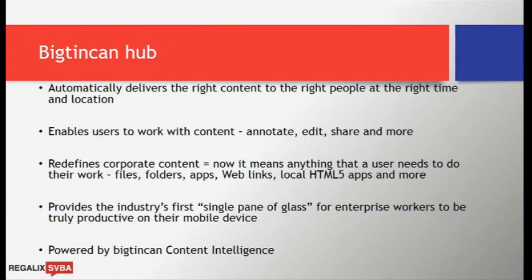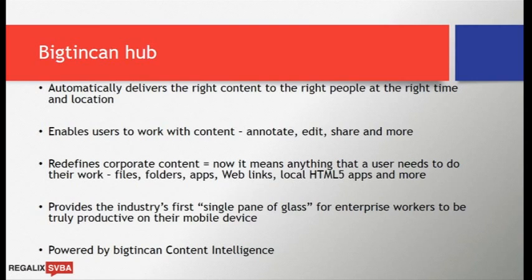Our technology, Big Tin Can Hub, provides first of all a tool that enables you to automatically deliver content out to people on mobile devices, and it supports all the different mobile device platforms and works in an interactive way. But as well as that, it enables users to actually work with content. We really believe that these devices are more than just viewers of PDF files — they're tools that could be used to change the way people actually work every day. Big Tin Can Hub enables users to edit Microsoft Office format documents, to annotate on PDFs, to view different kinds of content, and to share and control that information on their device.